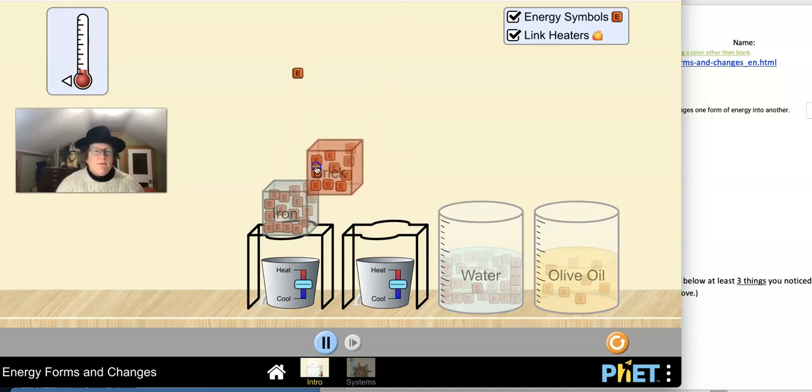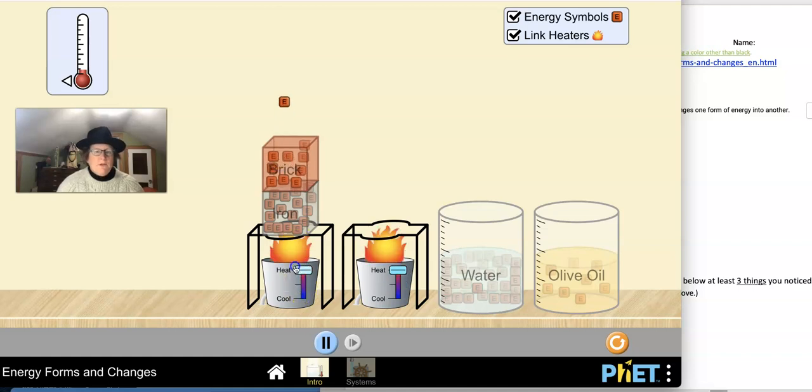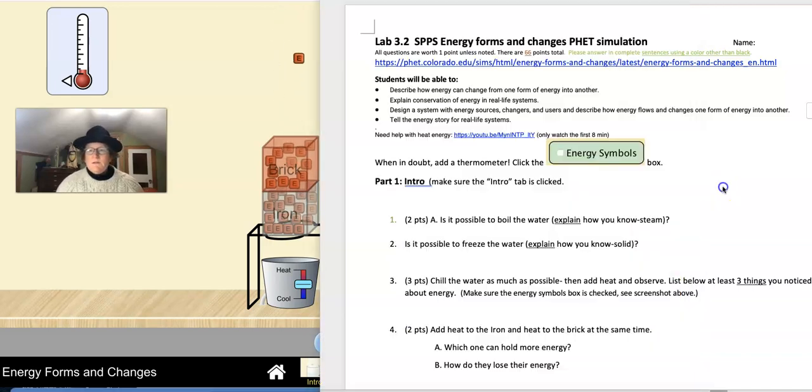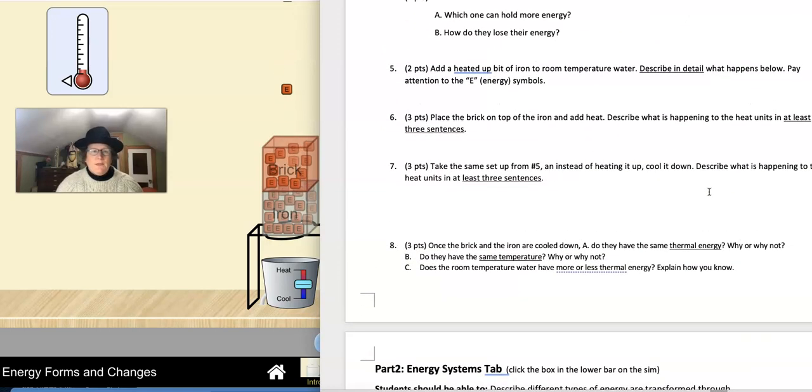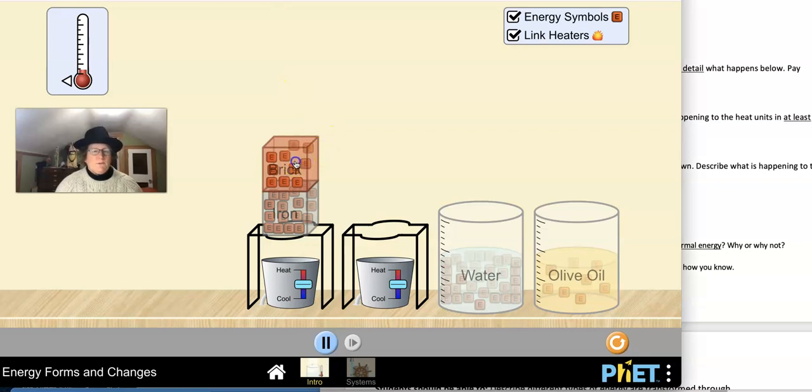We can stack the two objects. And you notice as iron heats up, some of the energy is transferred to the brick. And then it leaves the iron-brick system. I don't need to link my heaters anymore. So that's what you need to know to use the simulation for questions for part one. Questions one through eight. You can use the simulation yourself and answer the questions. I've given you the tools you need to know to answer those questions.